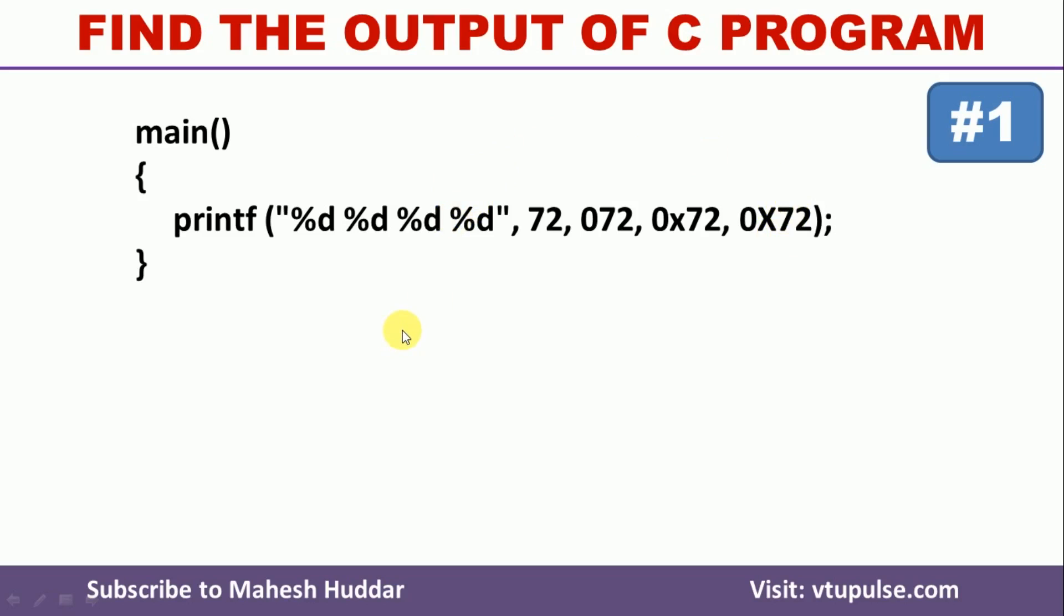The output of this program looks something like this. First 72 will be printed as it is. In the second place, the decimal equivalent of octal 072 is displayed, that is 58.